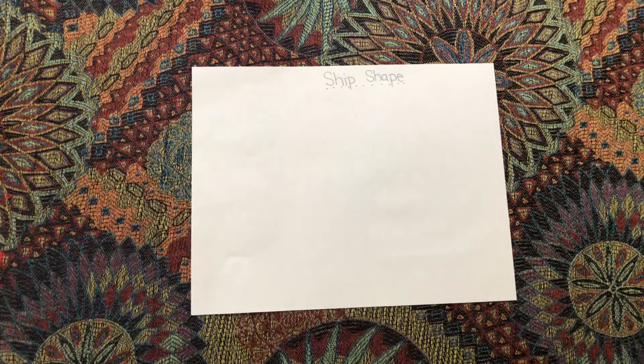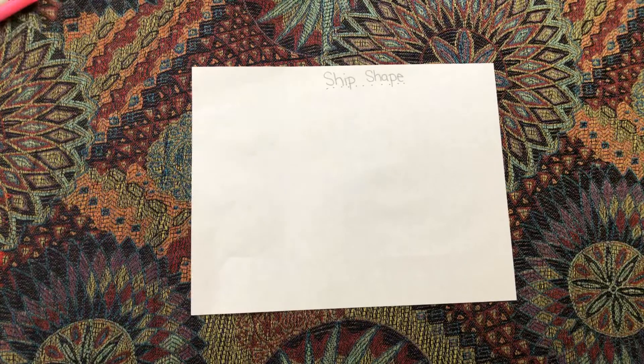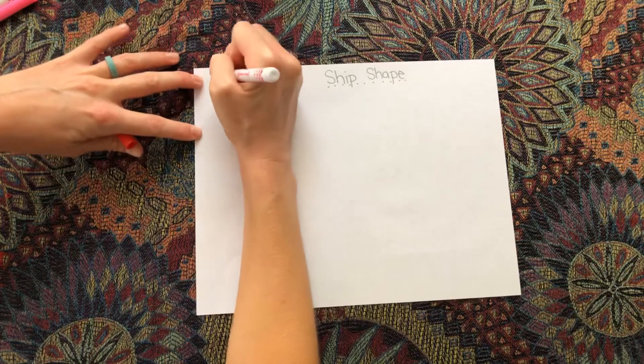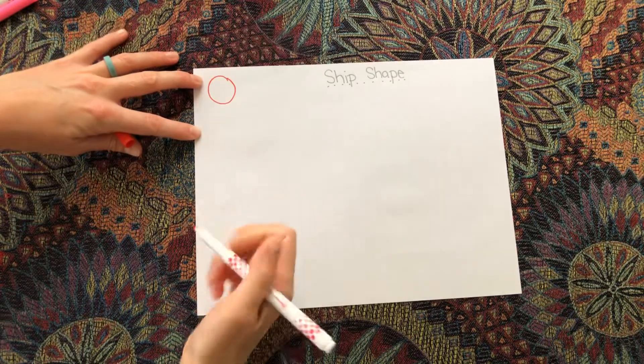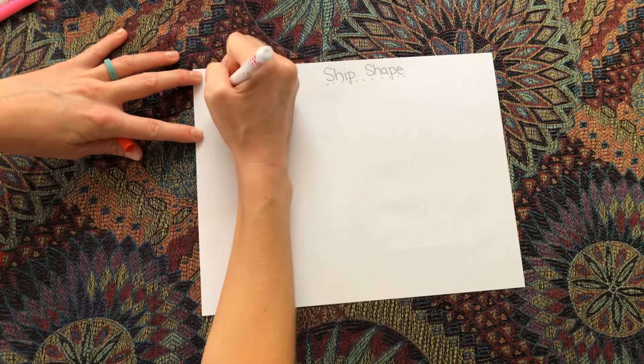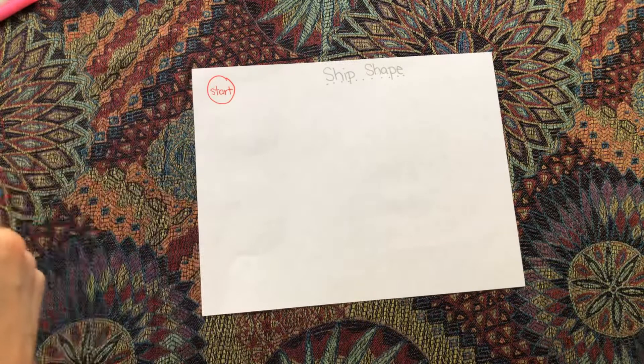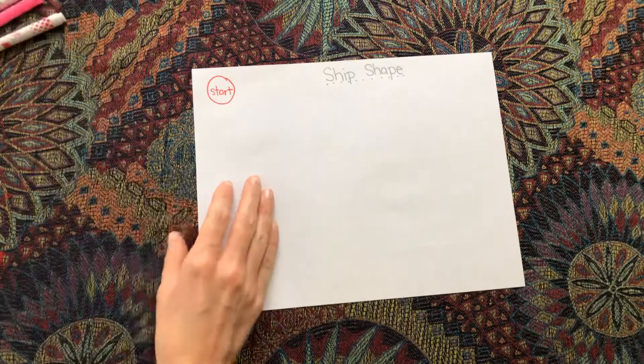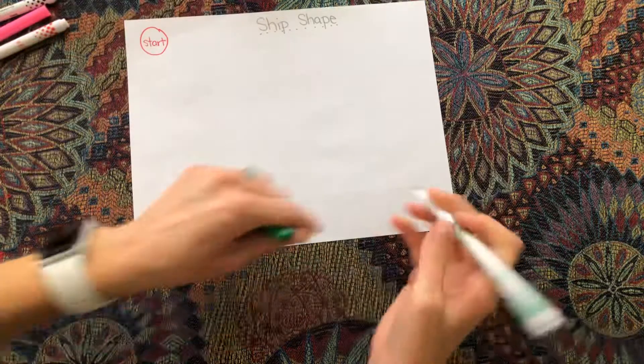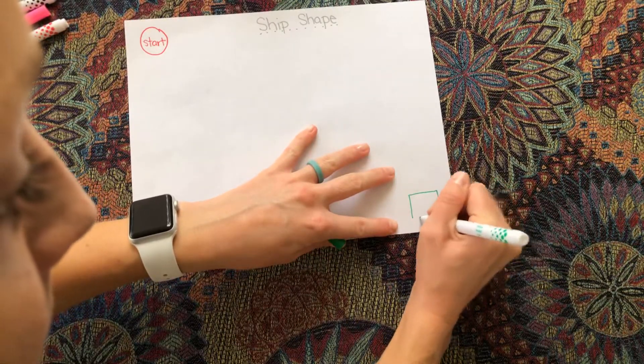Then you are going to need a start and a finish for your game. I'm going to make my start a circle. I'm going to write the word start inside. Yours doesn't have to be the same shape as mine, so you're just going to pick a start and a finish. Square. Finish.